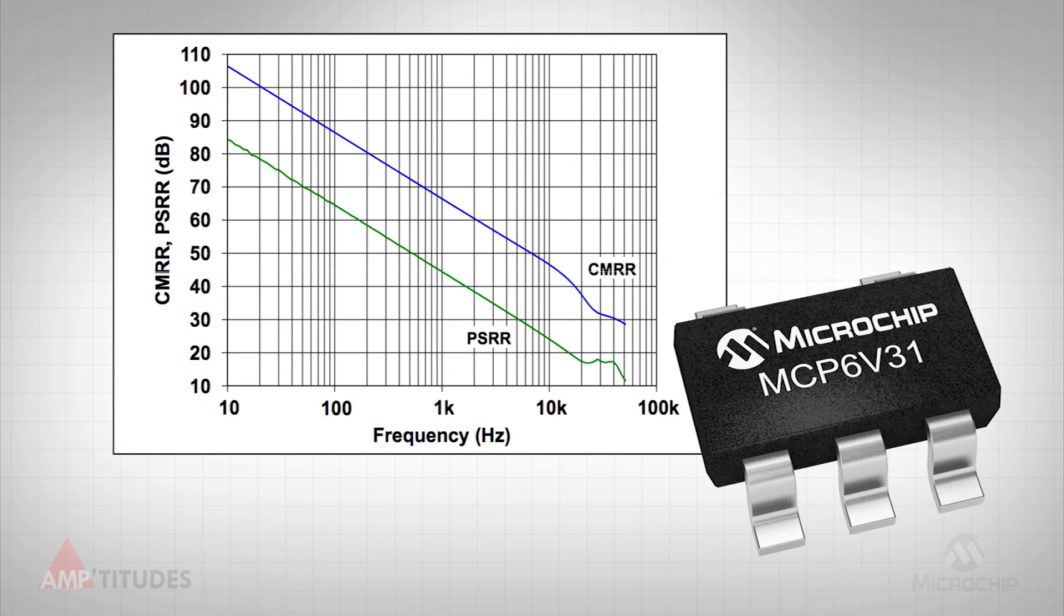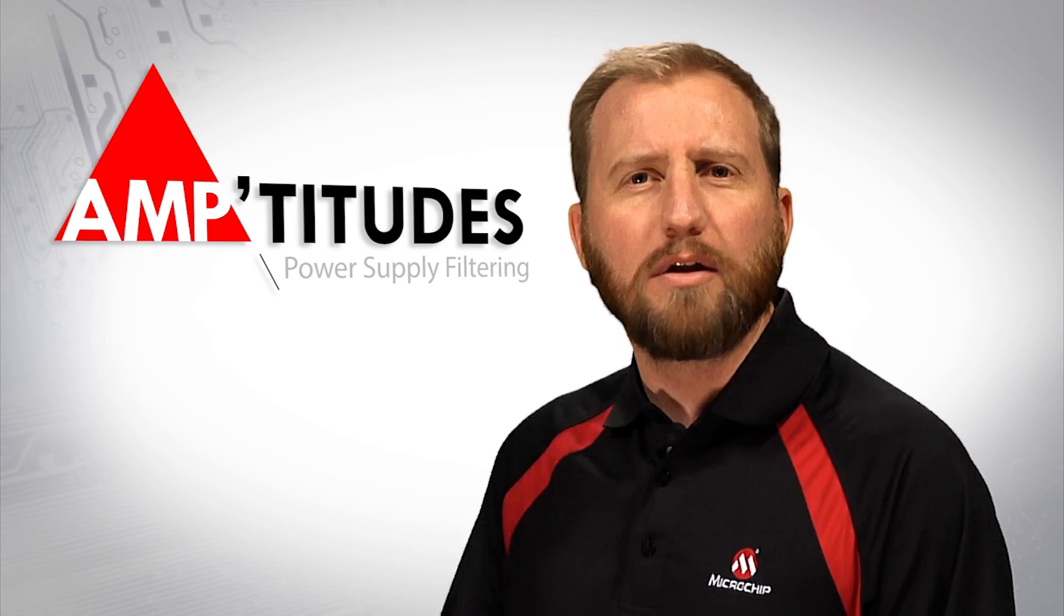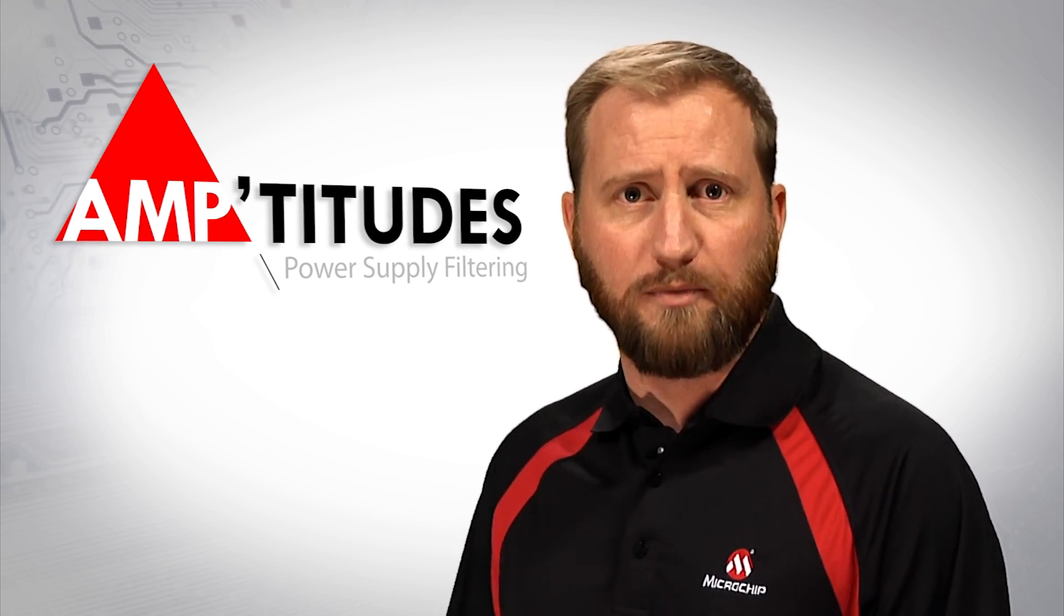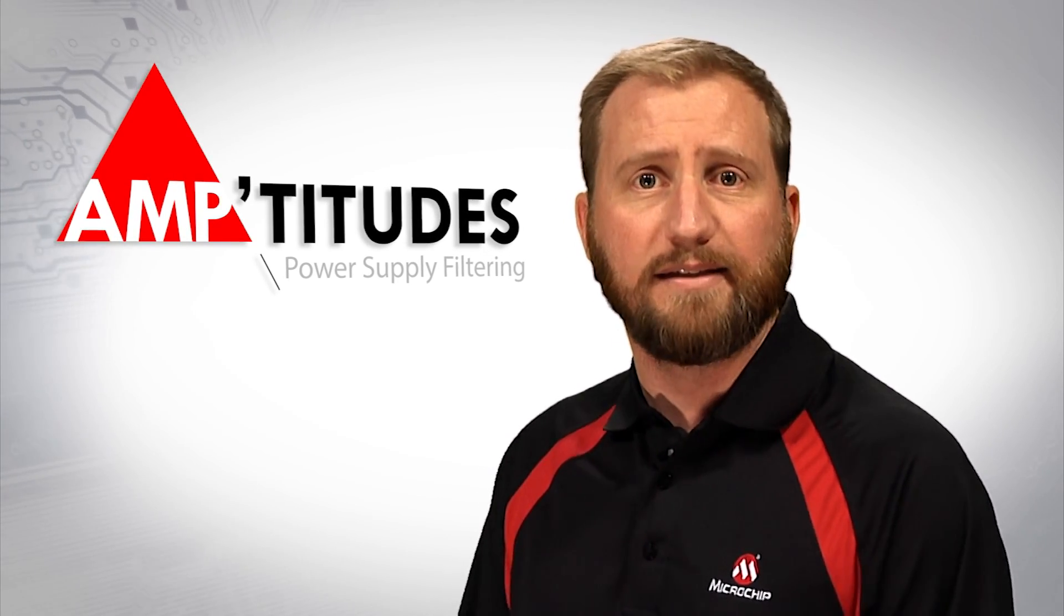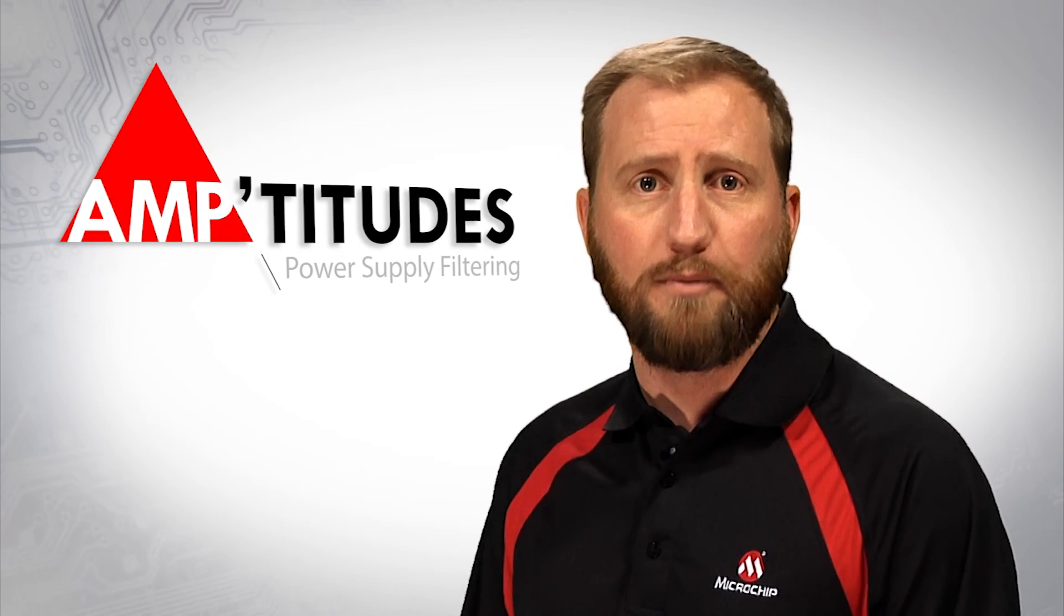For example, here is the PSRR and CMRR versus frequency for Microchip's MCP6V31 Zero Drift Operational Amplifier. At low frequency, the PSRR is over 80 dB, but drops off at a rate of 20 dB per decade. Hence, it is critical to provide proper filtering on the power supply to eliminate any unwanted noises at higher frequencies that may couple into the amplifier's output.